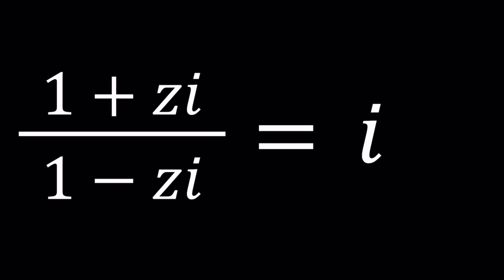We have 1 plus zi divided by 1 minus zi and that is equal to i. I is the number whose square equals negative 1, also known as the square root of negative 1. Negative 1 actually has two square roots but one of them is considered the principal square root and it's called i.